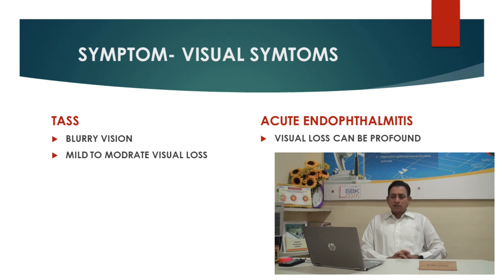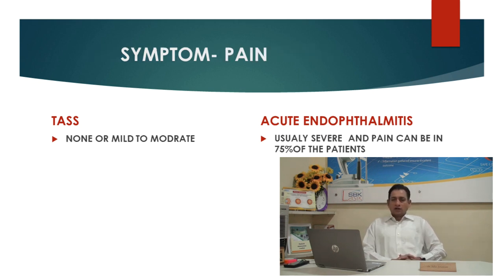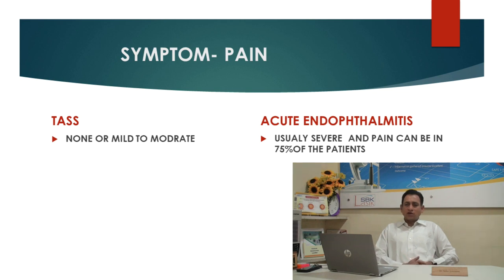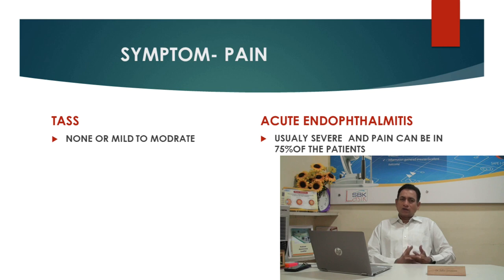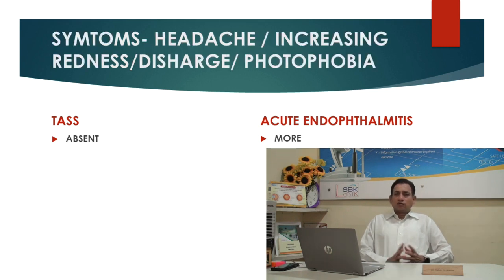Comparing visual symptoms: in TASS there will be blurring of vision or mild to moderate visual loss, whereas in acute endophthalmitis visual loss can be profound. In TASS there will be no pain or just mild to moderate pain. In endophthalmitis there will be severe pain, present in 75% of cases. Symptoms like headache, increasing redness, discharge, and photophobia are more common in endophthalmitis and usually absent in TASS.